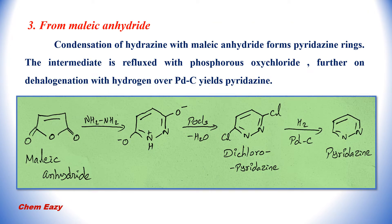In the third method, pyridazine can be synthesized from maleic anhydride. Hydrazine undergoes condensation with maleic anhydride and produces the intermediate pyridazine ring. This intermediate reacts with phosphorus oxychloride and produces dichloropyridazine. This dichloropyridazine on dehalogenation with hydrogen over palladium carbon produces pyridazine.